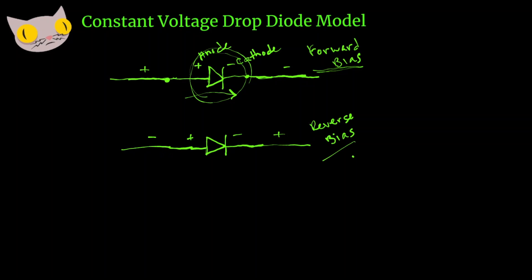This second one is a reverse bias diode, because you have your negative lead connected to the positive side and your positive lead connected to the negative side. This will not allow current to flow, or it's going to severely restrict it.